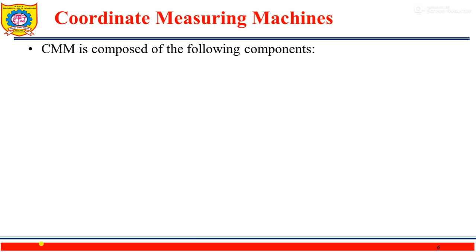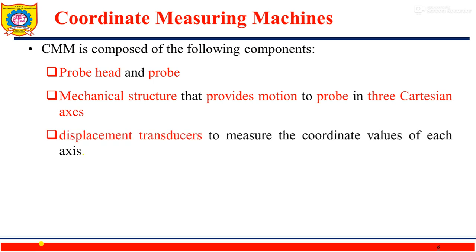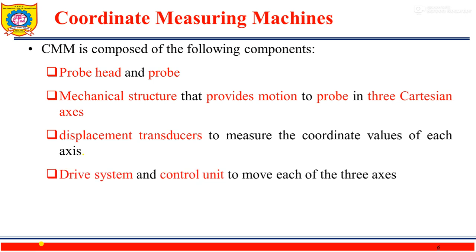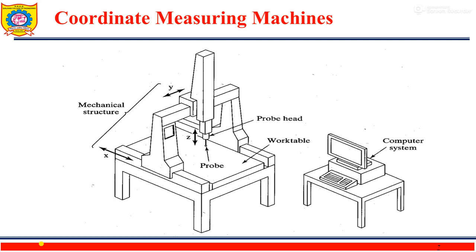Let us study the CMM construction. A CMM is composed of the following components: probe head and probe; a mechanical structure that provides motion to the probe along three Cartesian axes; displacement transducers to measure the coordinate values of each axis; and a drive system and control unit to move each of the three axes. The work table is horizontal, mostly in the XY plane.